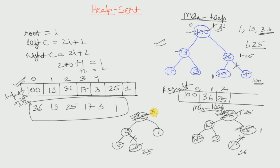We have three elements in consideration: 3, 19 and this one. Obviously 19 is the largest, so 19 will replace 3 at the root and 3 will come to 19's location. Now 3 is compared with its left and right child — remember we have unlinked the right child — so it is only compared with the left child. The left child is 17, which is greater than 3, so 17 replaces 3 and 3 comes down. Since 3 has no left and right child, the percolate down stops, and we now have three elements in our resultant array.